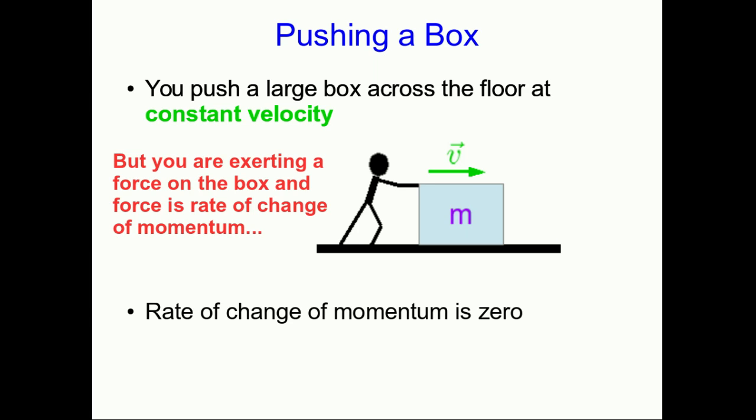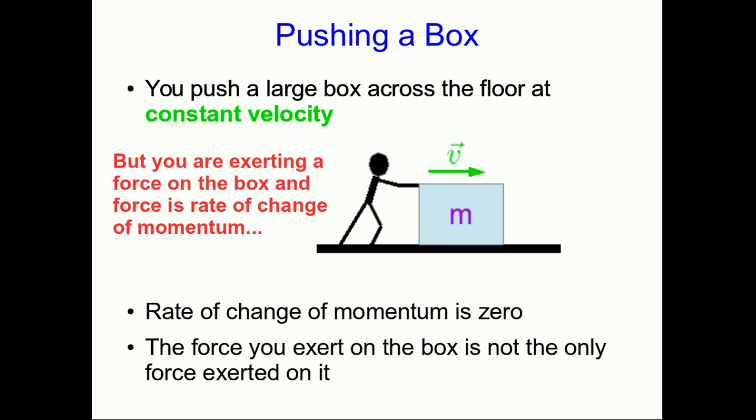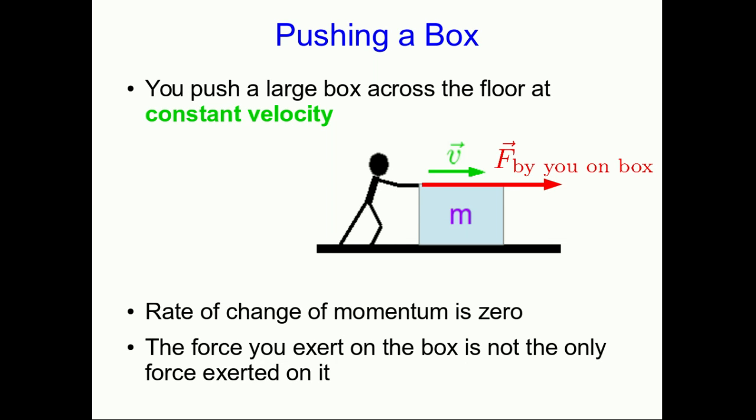But you are exerting a force on the box, and we've defined force as the rate of change of momentum. The reason this can happen is that the force you are exerting on the box isn't the only force exerted on it. You're pushing forward on the box, but the box is also interacting with the floor, and there will be a frictional force back on the box due to the floor.